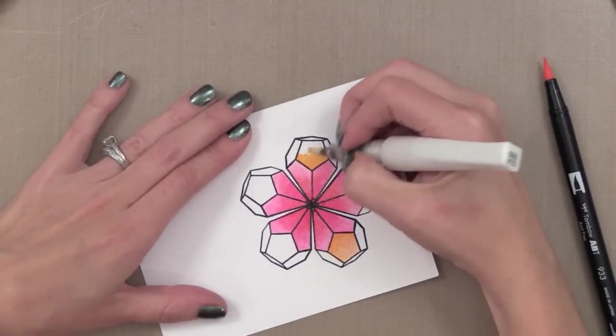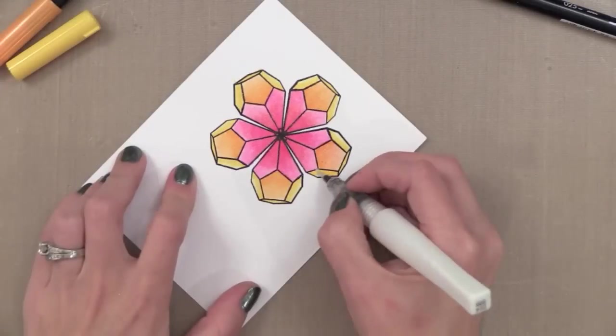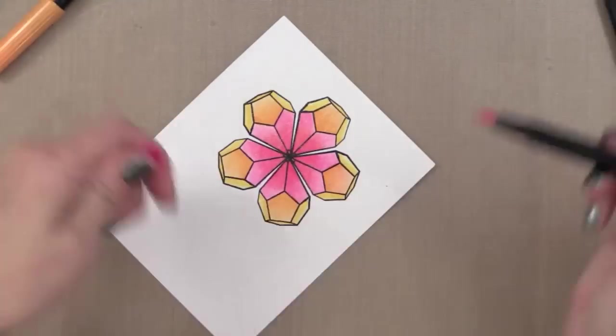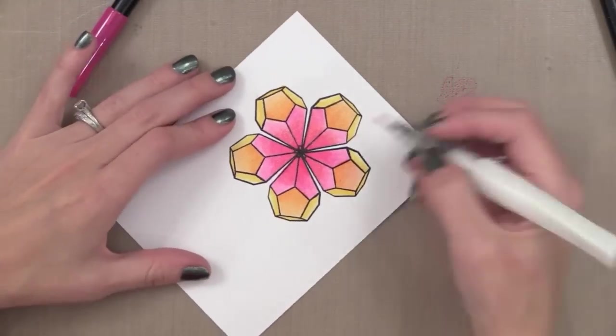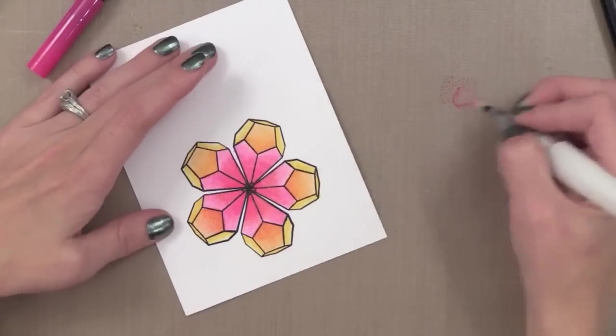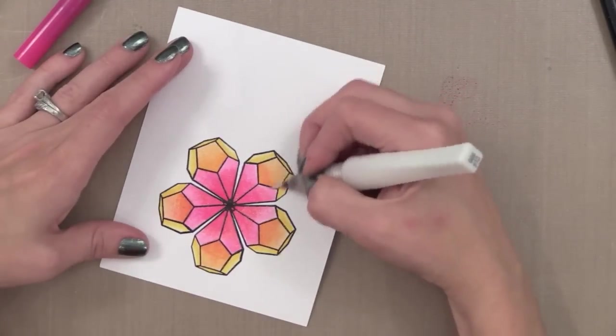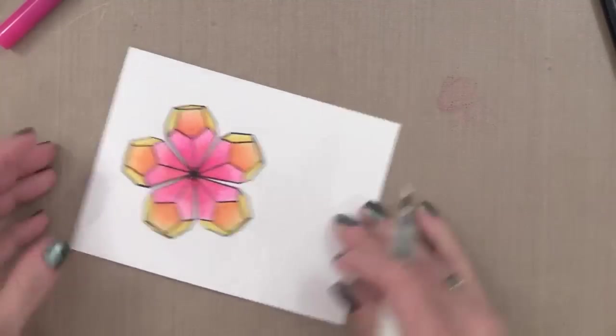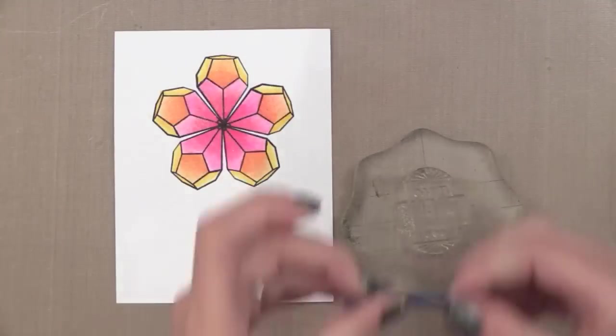Again if you don't have the Wink of Stella you could use water brush here or just use water like you would water color. After I did all this I decided I wanted that area with the orange to be a little more peachy. So I took my pink marker, scribbled it on my craft sheet or you can scribble it on an acrylic block or some plastic if you want to. Picked up some of that pink with my Wink of Stella and brought it onto the project. Therefore kind of changing it a little bit and making it more peachy.